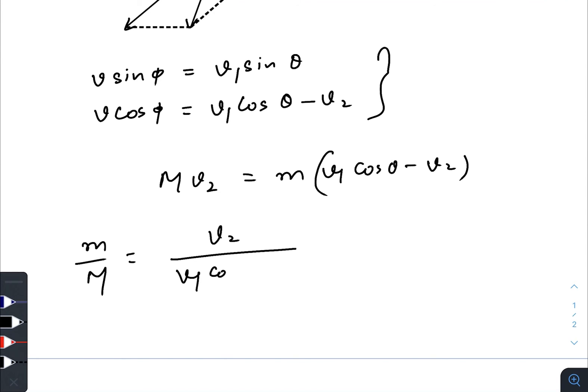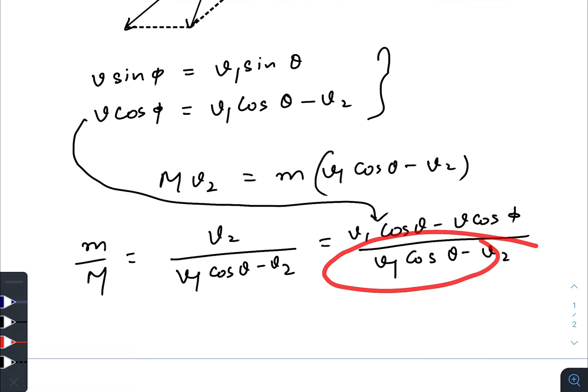It is very simple that small m divided by capital M is v2 divided by v1 cos theta minus v2. As you can see, we will use this equation to replace v2, which would give you v1 cos theta minus v cos phi divided by v1 cos theta.